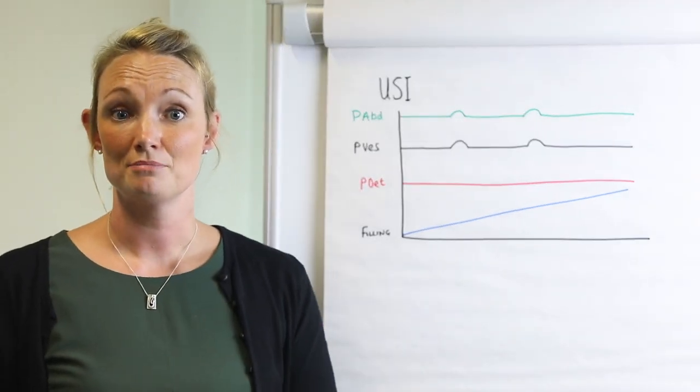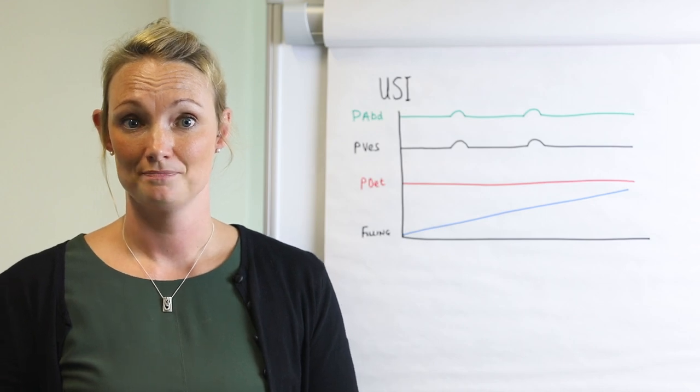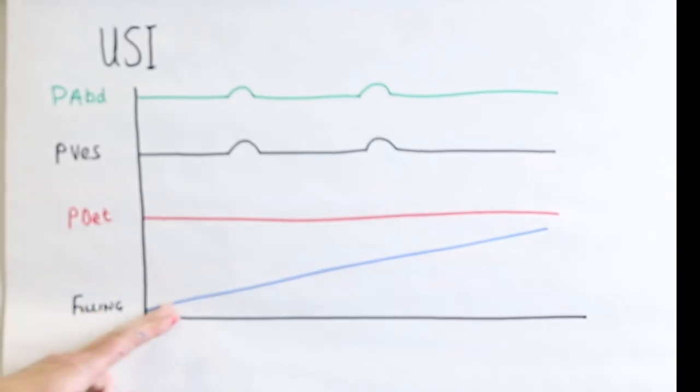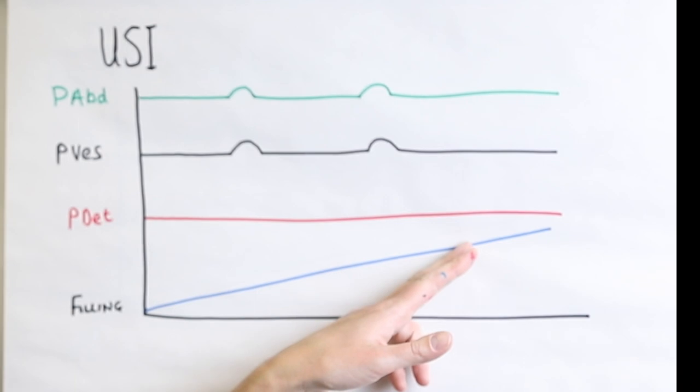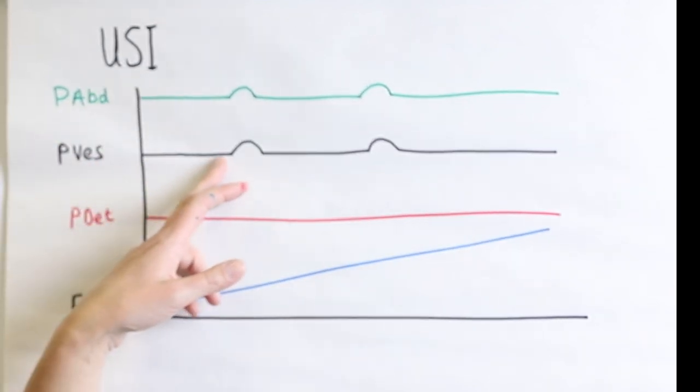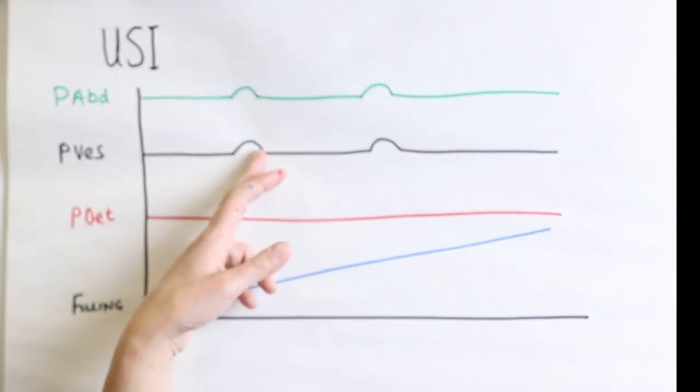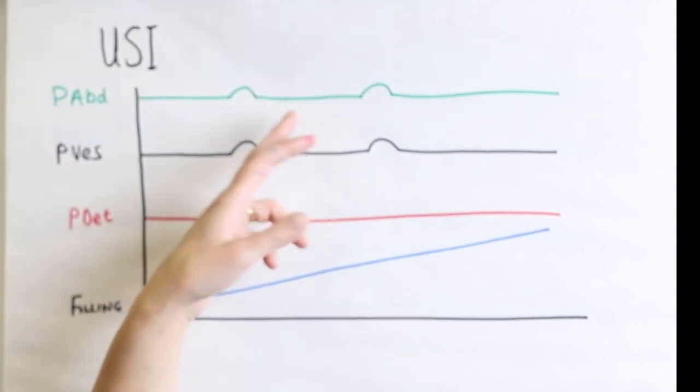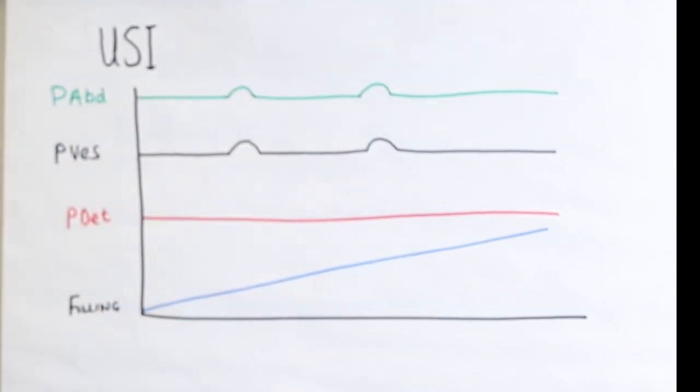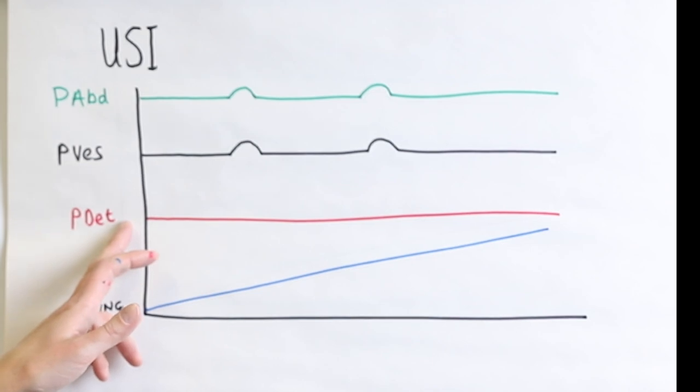These diagrams show a representation of what happens in each case. This is the filling line, which increases throughout the test. This is the intravesical line, the line which is physically inside of the bladder. And this is the intra-abdominal line, the line which is measuring the intra-abdominal pressure. And the detrusor pressure is this one.